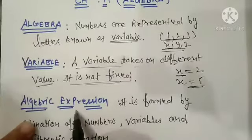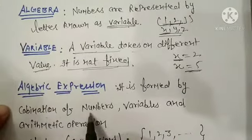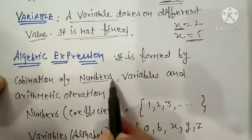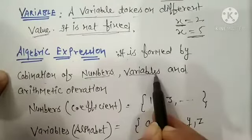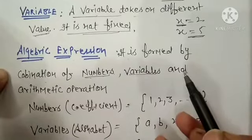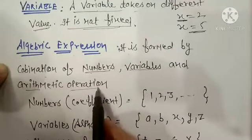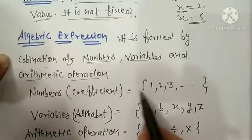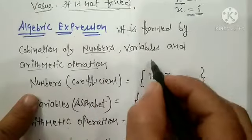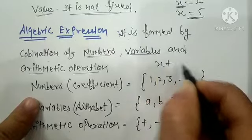Another important topic is algebraic expression. What is an algebraic expression? It is formed by the combination of numbers — 1, 2, 3, 4 — and variables — x, y, z — and mathematical operations such as plus, minus, division. Their combination is what we call an algebraic expression.